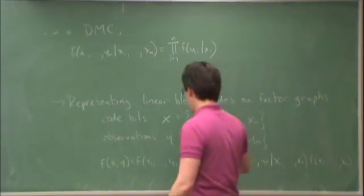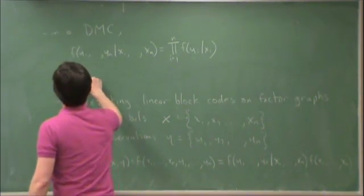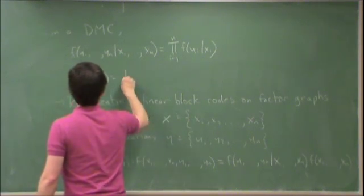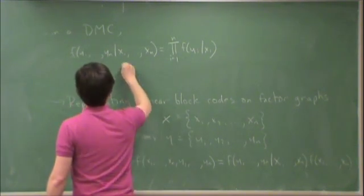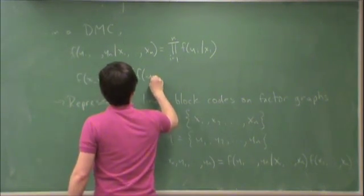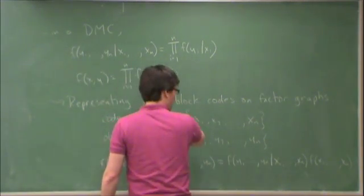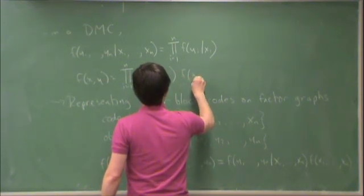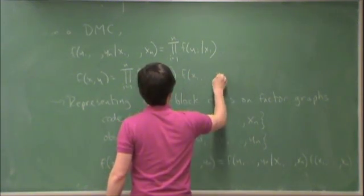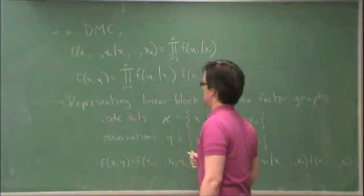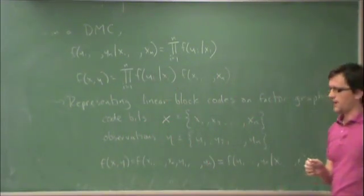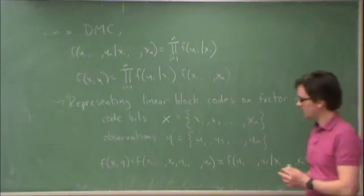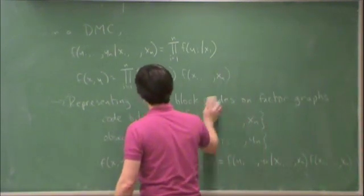So we end up with F of X and Y is equal to the product from I equals 1 to N of F of YI given XI and F of X1 up to XN. Okay, so now we're getting somewhere. Now we have a factored model. We have a model with factors in it.